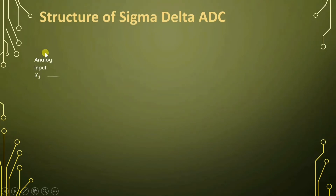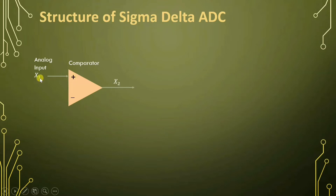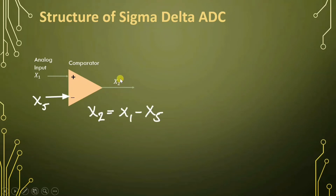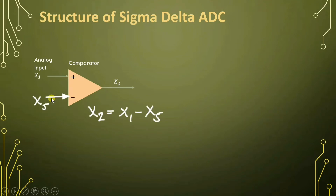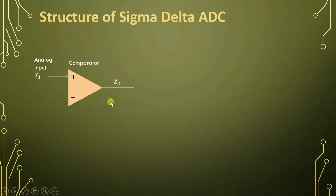In its structure, we have an input analog signal — let us say that is X1 — which we give to the comparator. The positive terminal is connected with the input analog voltage and the negative terminal is connected to the feedback. Whatever difference is there between the two terminals will appear at the output side as X2. So X2 will be the difference between X1 and X5, that is X2 equals X1 minus X5.